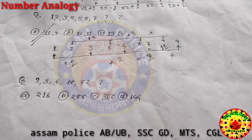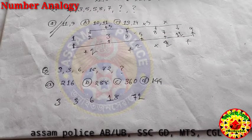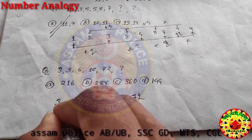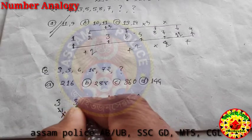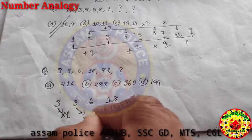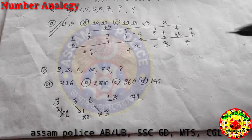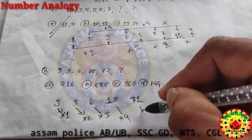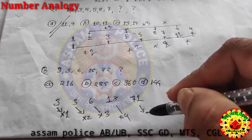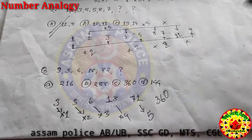Next question: 3, 3, 6, 18, 72, ?, find the missing number. Let's solve it. 3 multiplied by 1 gives 3. 3 multiplied by 3 gives 6 — wait, 3 multiplied by 2 gives 6. 6 multiplied by 3 gives 18. 18 multiplied by 4 gives 72. And 72 multiplied by 5 gives 360. So the answer is 360.